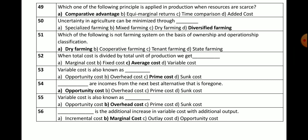To clarify the confusion between questions 53 and 55: in question 53, variable cost is also known as prime cost. In question 55, fixed cost is also known as overhead cost. So: prime cost = variable cost, and overhead cost = fixed cost.